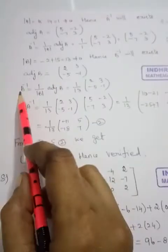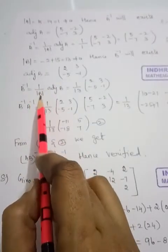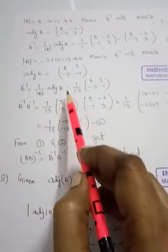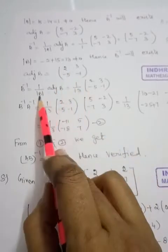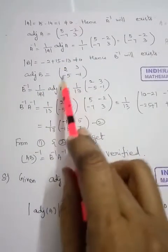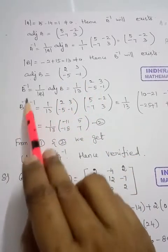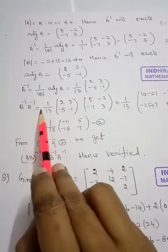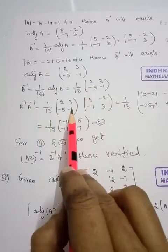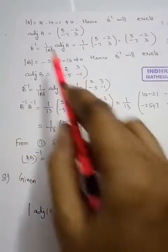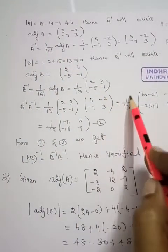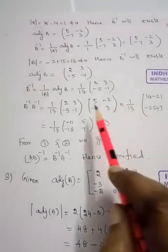So B inverse equals 1 by determinant B into adjoint of B, that is 1 by 13 into the adjoint matrix substituted. Now B inverse into A inverse is 1 by 13 into B inverse substituted, with A inverse value already obtained and substituted. That is equal to 1 by 13 into the product — multiply it.